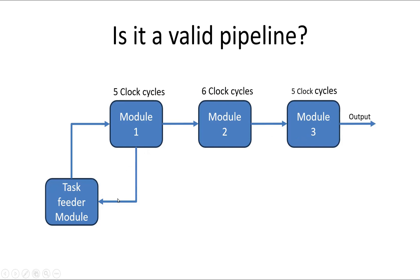Our task feeder module can feed tasks to module 1 after every 6 clock cycles. In reality, we don't need to have any feedback in the pipeline system because we know that each module is taking a fixed number of clock cycles.